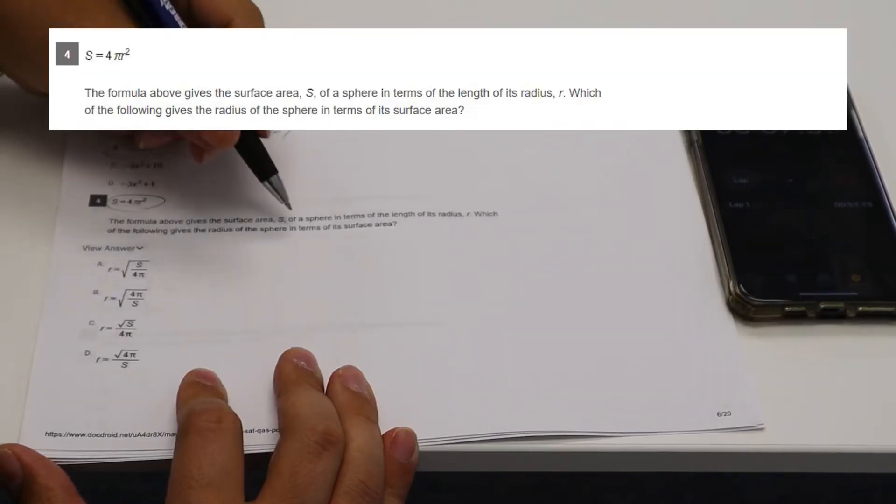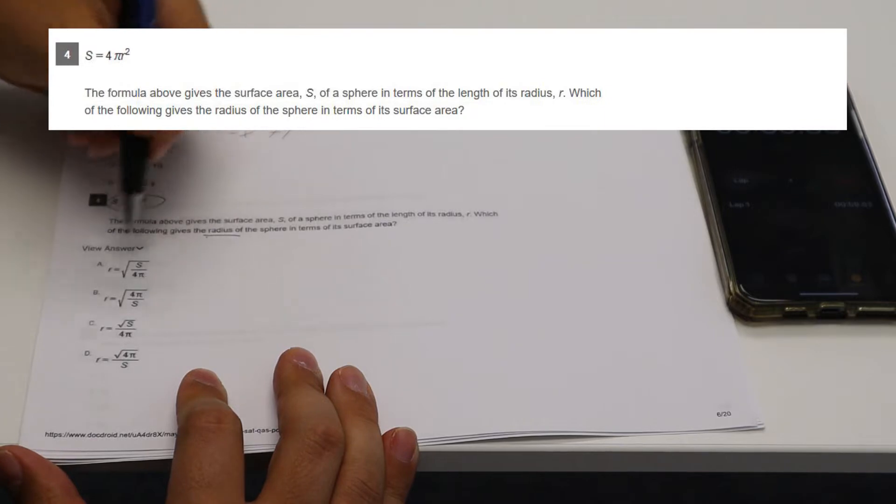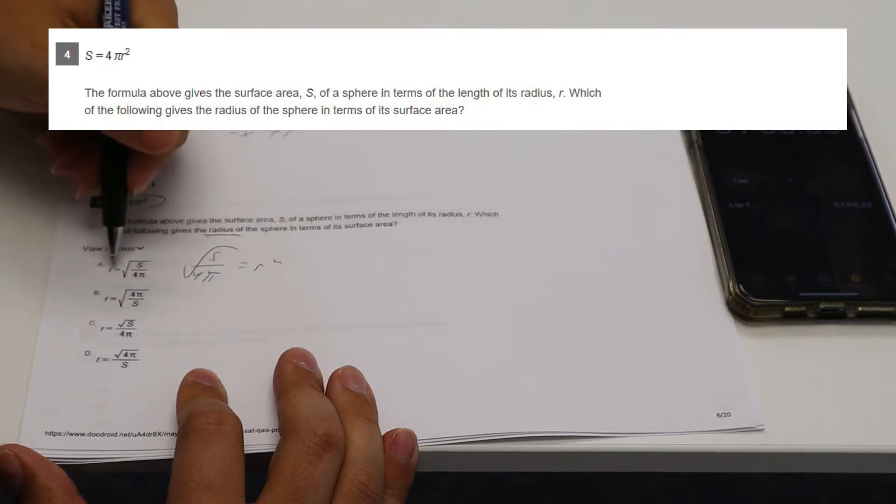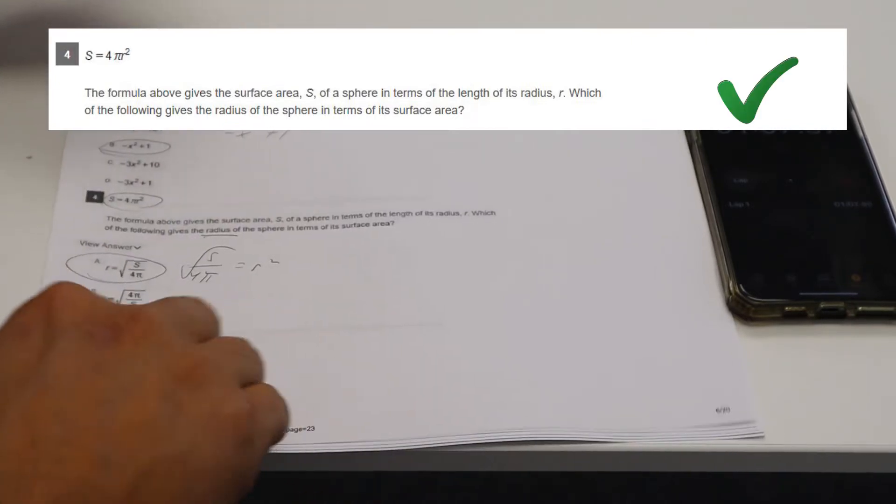This formula, they want to solve for radius. So S over four pi equals R squared. So it's going to be A. Very good.